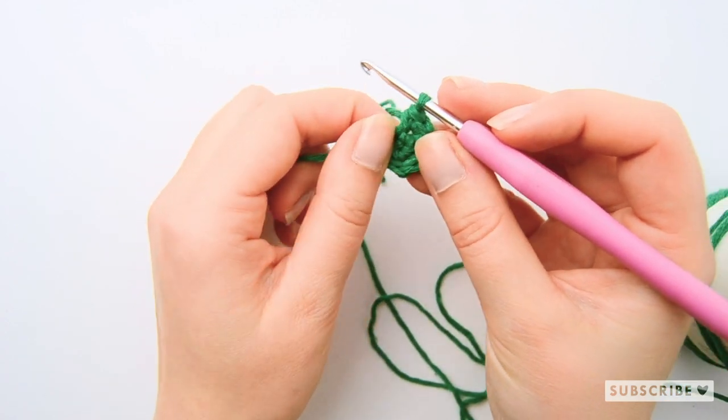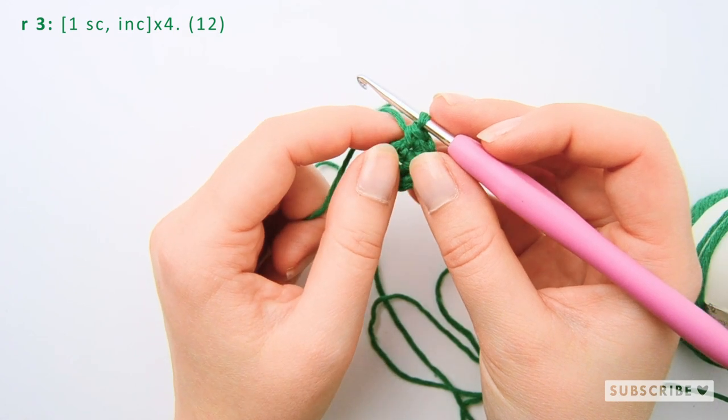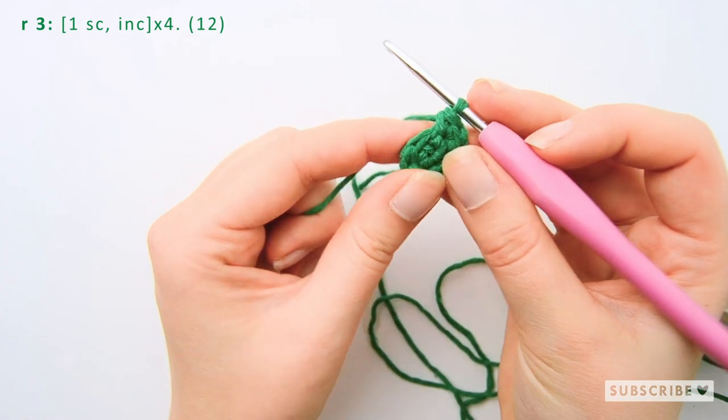On the third row we are going to crochet one single crochet, one increase, repeat that four times until we have 12 stitches.